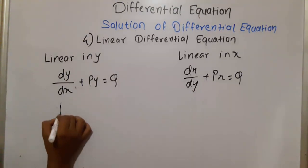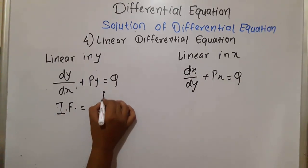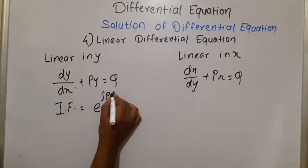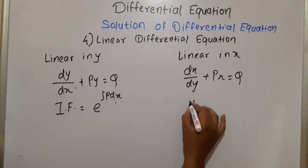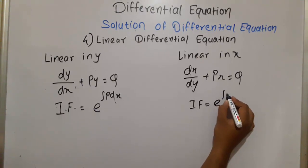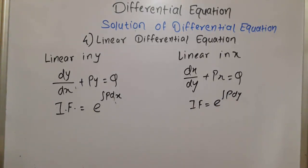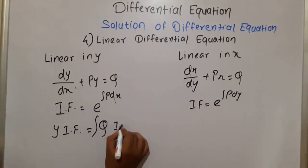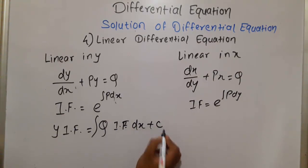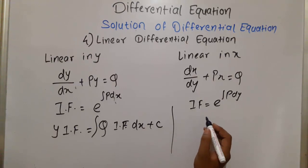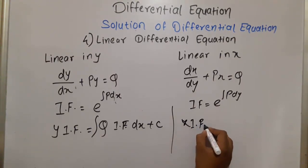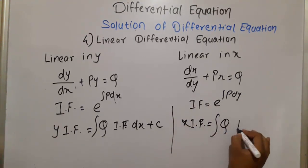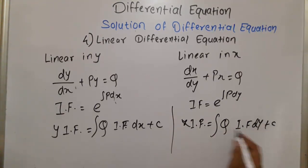To find the solution of these equations, we find the integrating factor. For the equation linear in y, the integrating factor is e^(∫P dx). For the equation linear in x, the integrating factor is e^(∫P dy). The solution for linear in y is: y·(integrating factor) = ∫Q·(integrating factor) dx + c.